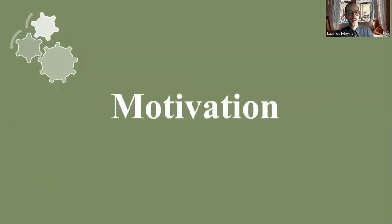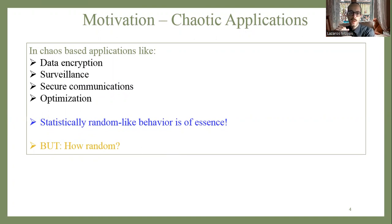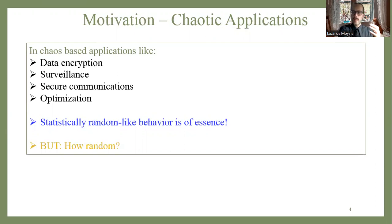So what is this topic about? Let's discuss our motivation. Chaos-based applications are everywhere nowadays — there have been numerous approaches for various applications developed. Some examples are data encryption via chaos, surveillance through chaotic systems, chaotic motion in robots, secure communications where a chaotic system is used to mask and transmit information safely, and also chaotic optimization.